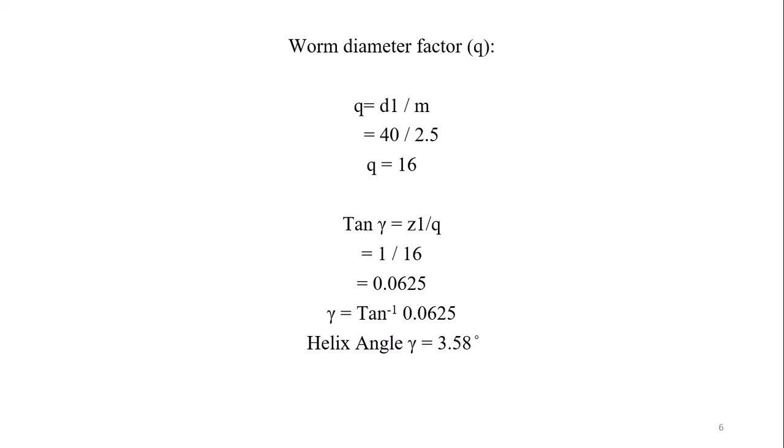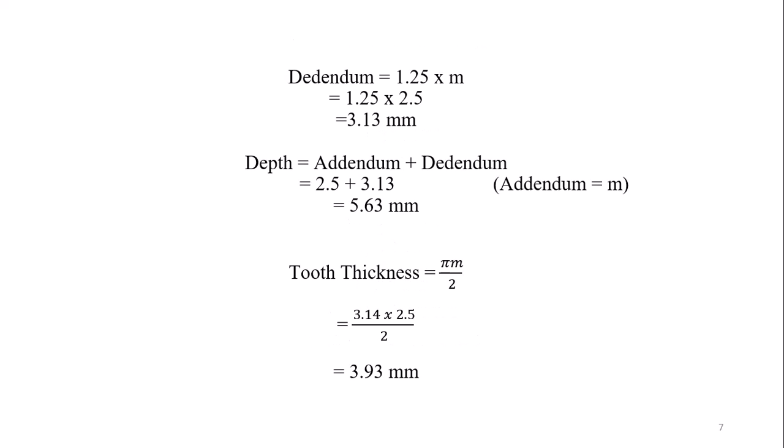Dedendum is 1.25 times module. Module we have is 2.5mm, so you can calculate accordingly. Depth equals addendum plus dedendum - total depth equals addendum plus dedendum. Tooth thickness equals pi times m divided by 2, so tooth thickness also you can get from here.